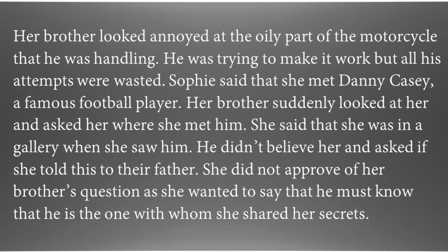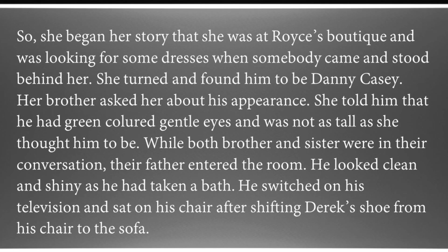Her brother looked annoyed at the oily motorcycle part he was handling, with all his attempts wasted. Sophie said that she had met Danny Casey, a famous football player. Her brother suddenly looked at her and asked where she had met him. She said she was in a gallery when she saw him. He didn't believe her and asked if she had told their father. Sophie began her story — she was at Royce's boutique looking for dresses when somebody came and stood behind her. She turned and found him to be Danny Casey. She told Joff that he had green-colored gentle eyes and was not as tall as she had imagined.